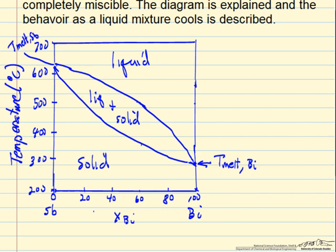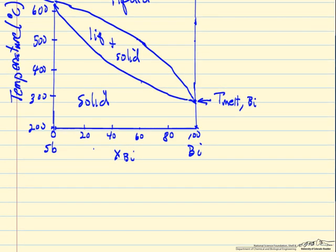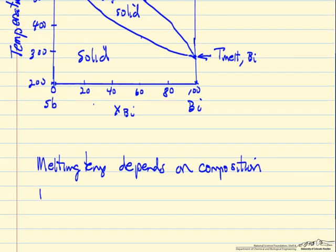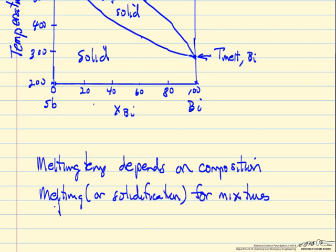What you notice for the in-between region is that the melting temperature depends on the composition of the alloy, composition of solid, or the solidification temperature, composition of the liquid. Further, the melting or solidification for mixtures takes place over a temperature range, whereas for a pure material it melts at just one temperature.